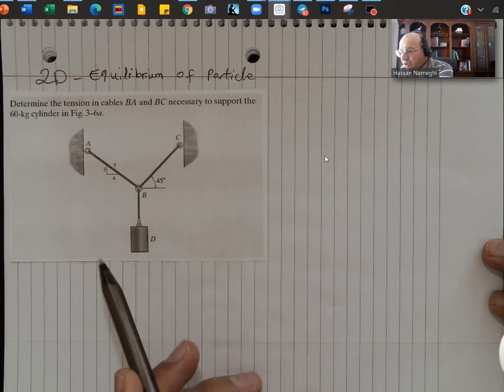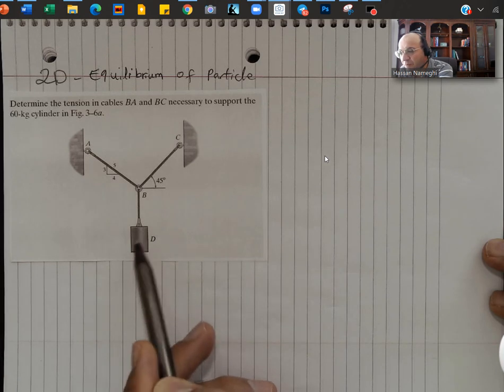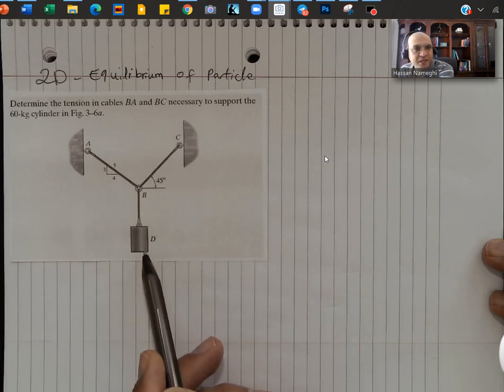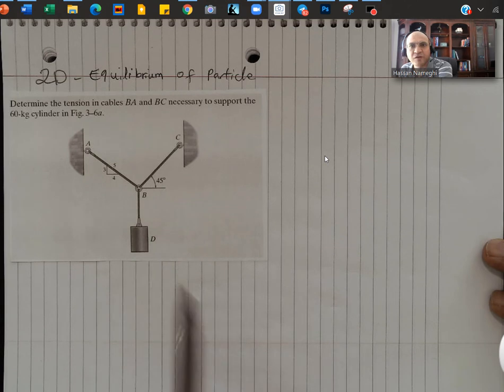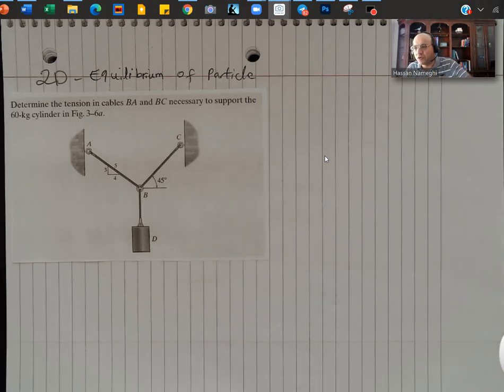They are in tension and the whole block at point D, the cylinder at point D, is pulling this structure down but those two cables are resisting this structure.